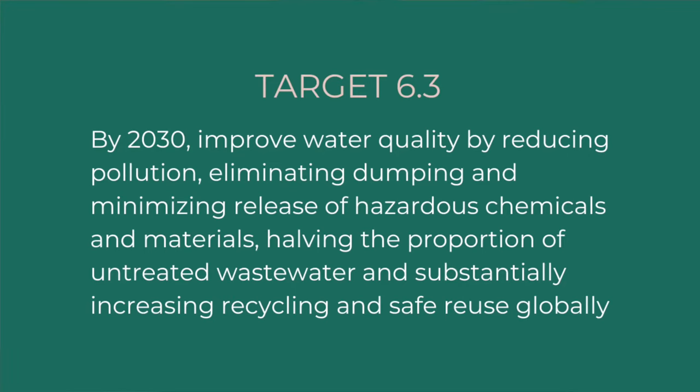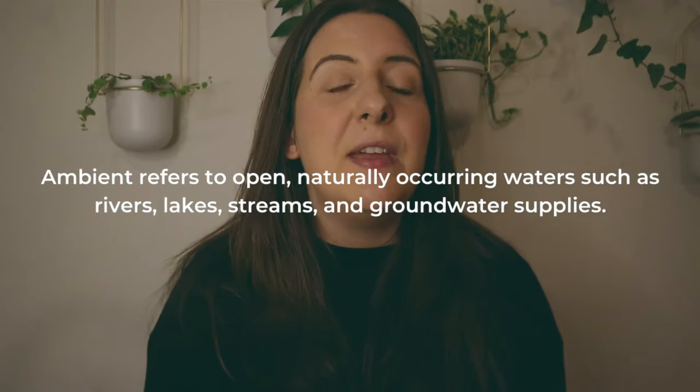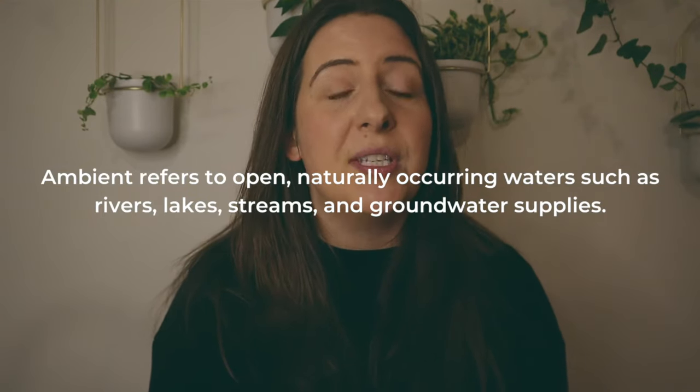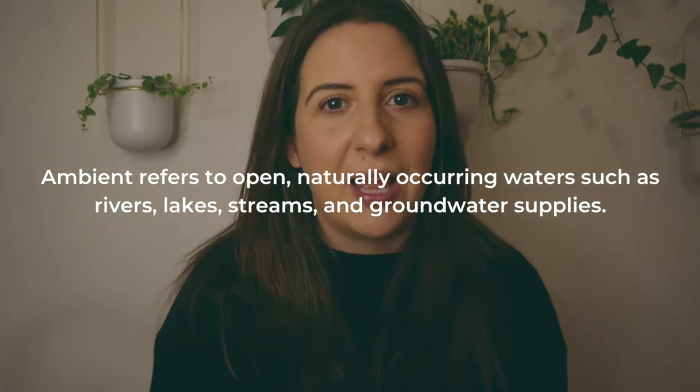Target 6.3: By 2030, improve water quality by reducing pollution, eliminating dumping, and minimizing release of hazardous chemicals and materials, halving the proportion of untreated wastewater, and substantially increasing recycling and safe reuse globally. Target 6.3 sets out to improve ambient water quality — ambient refers to open, naturally occurring waters such as rivers, lakes, streams, and groundwater supplies. Improving ambient water quality is essential to protecting both ecosystem and human health by eliminating, minimizing, and significantly reducing detrimental pathogens, nutrients, and other types of pollution from entering our environment.